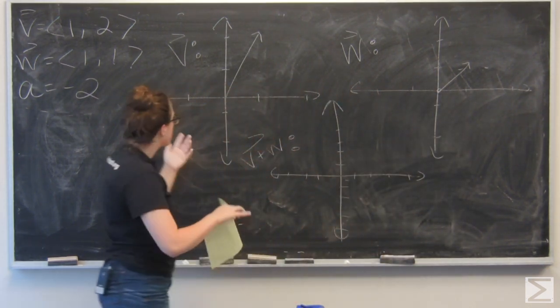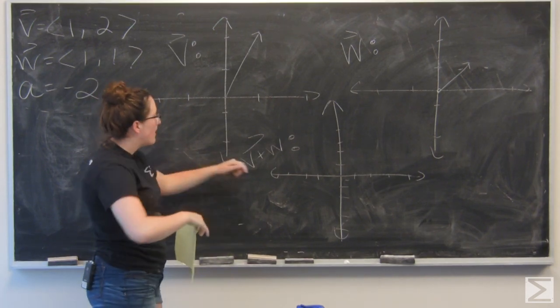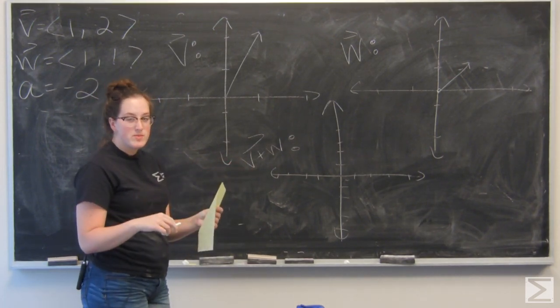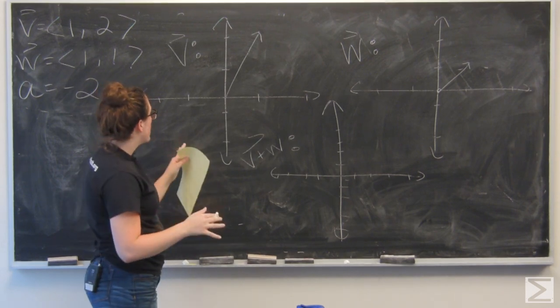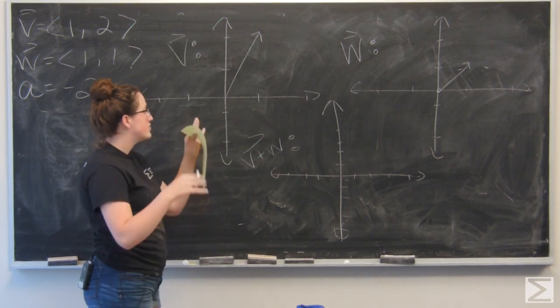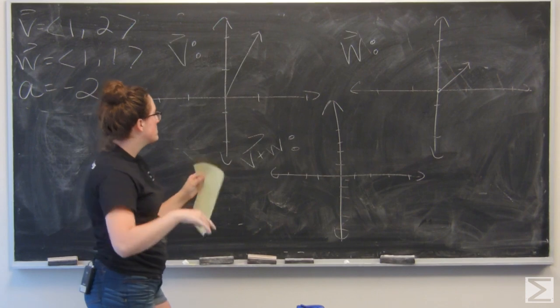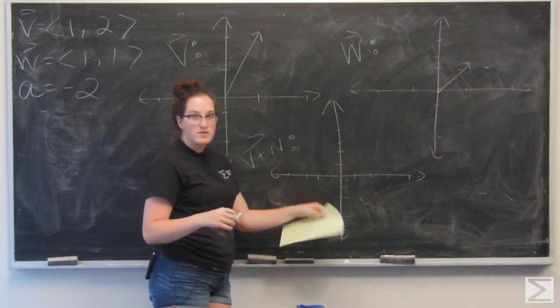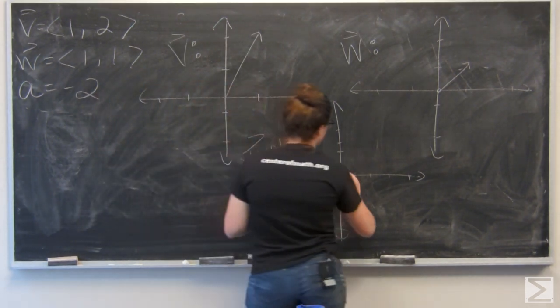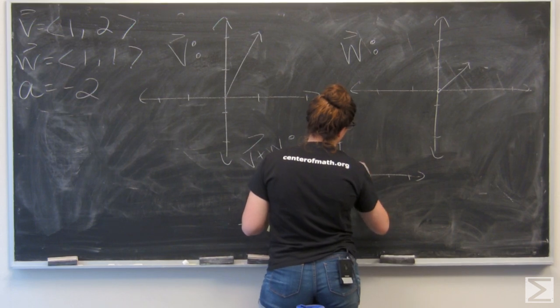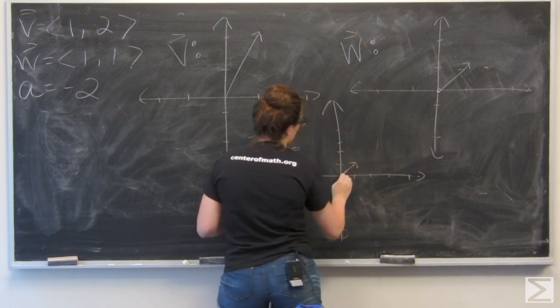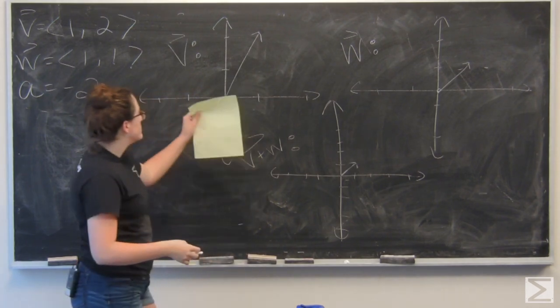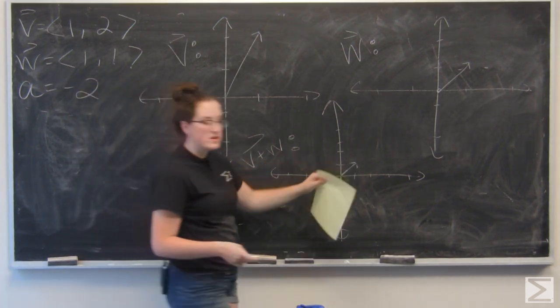Now I want to use the parallelogram method to find v plus w. So basically you draw the vectors end to end, so kind of arrow to tail. I'm going to start by drawing w. Scale here is a little bit smaller, but w is the vector (1, 1).